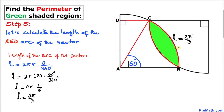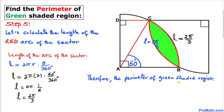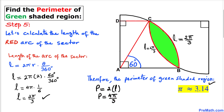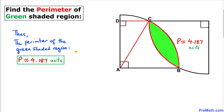By symmetry, all corresponding arc lengths equal 2π/3. Therefore, the perimeter of the green shaded region P = 2 × L = 2 × (2π/3) = 4π/3 units. Replacing π with 3.14, the perimeter is approximately equal to 4.187 units. Thus the perimeter turns out to be approximately 4.187 units.